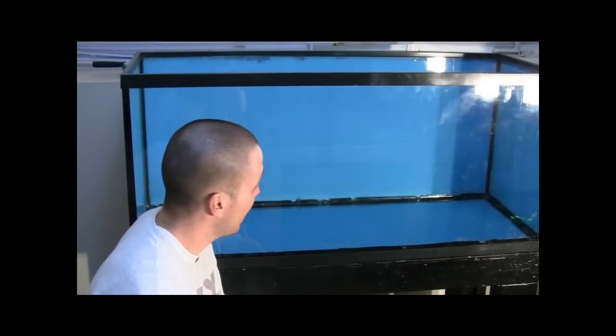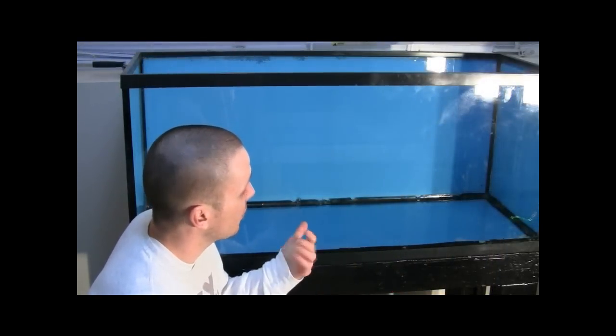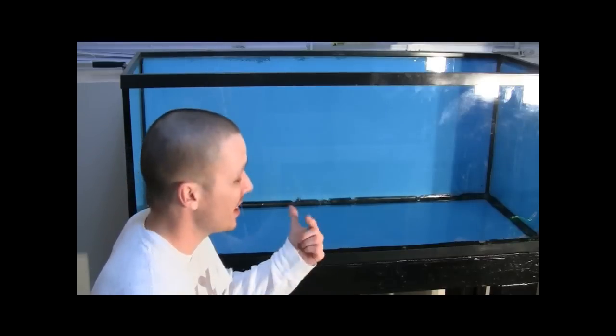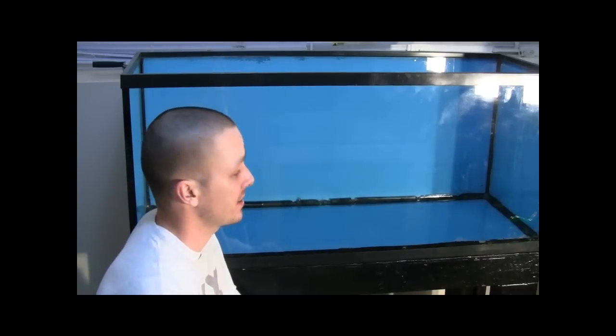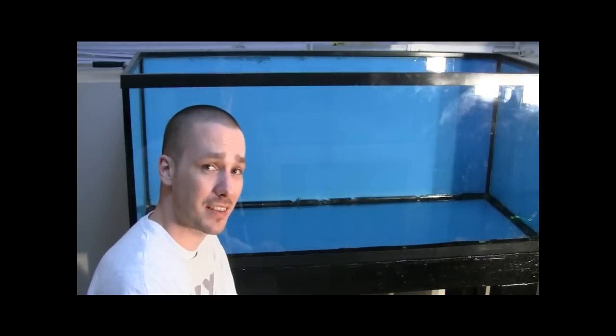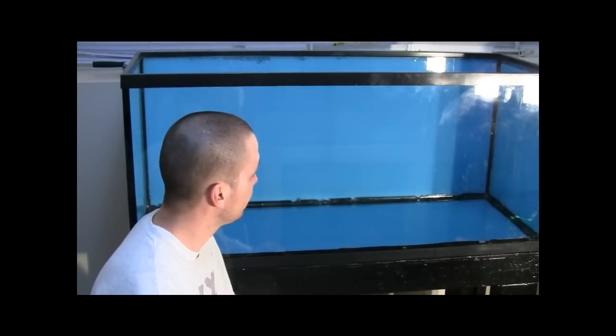So, that's it. Tank's done painted. So, I actually did overestimate exactly how much paint I would need. I ended up only needing two tubes of paint. It did the bottom, the two sides, as well as the back of the tank.